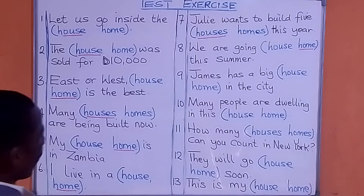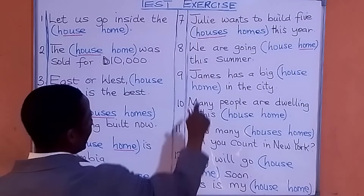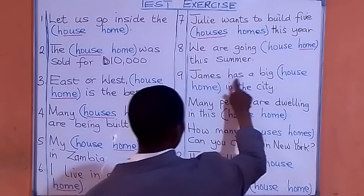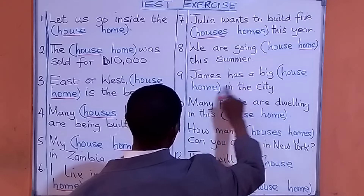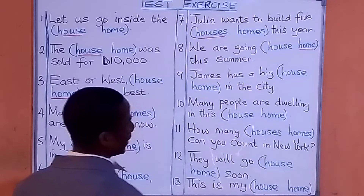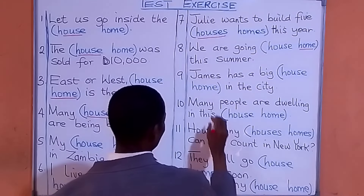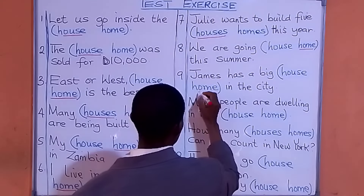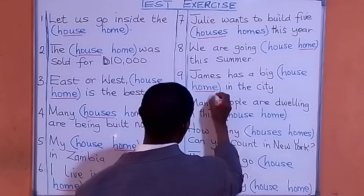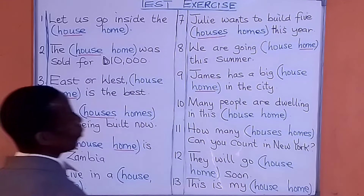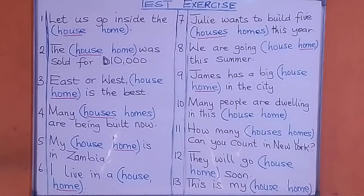Number nine: 'James has a big ___ in the city.' What are we going to put there? James has a big home in the city. You could also say house in the city.